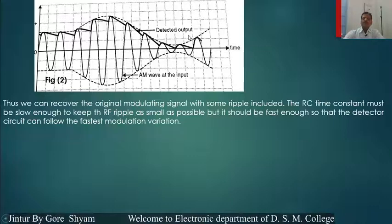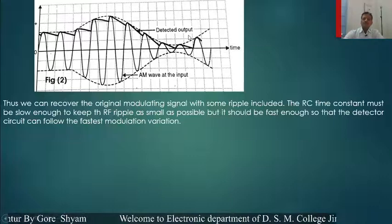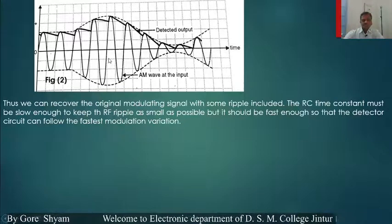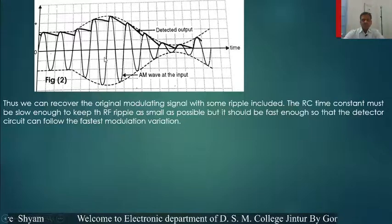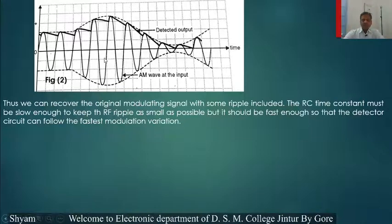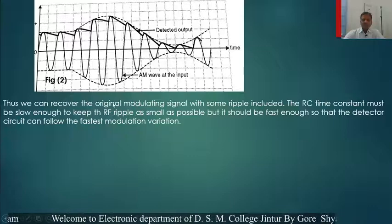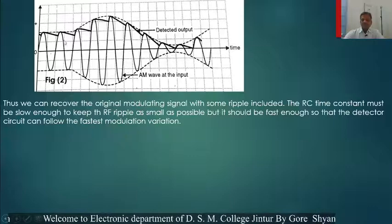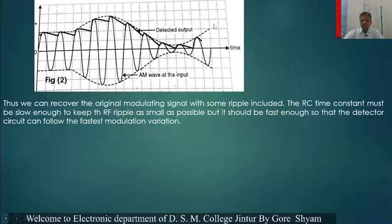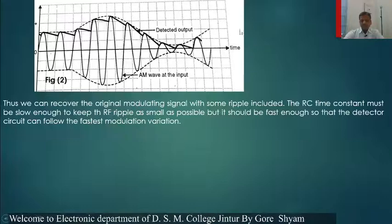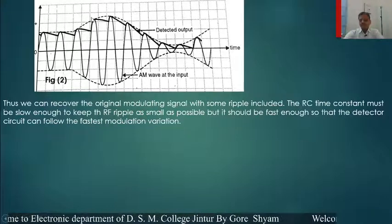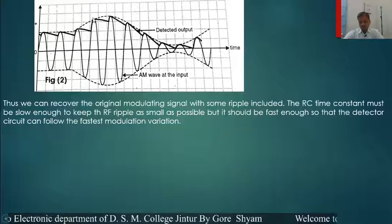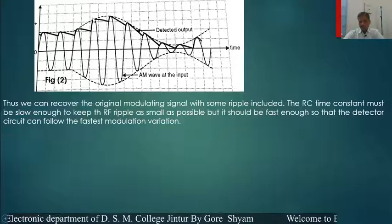The RC time constant of this circuit is very high, in order to obtain the modulating signal. In this way, we are getting the modulating signal from this AM detector. This is the amplitude demodulation.